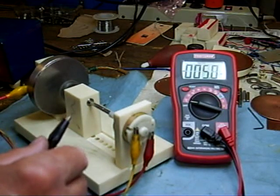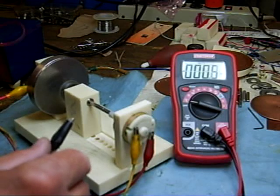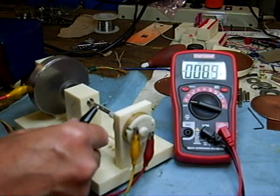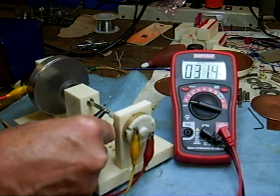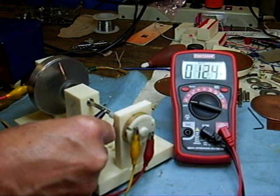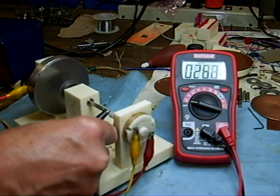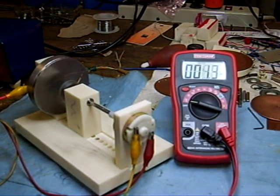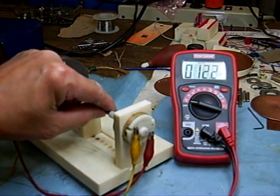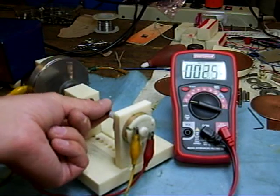So, if I take and change the direction around, and those were minus, and go the other way, now we get a positive 30. Slow it down, 26, 24, slow it way down, nothing. Speed it up. So, it's pretty obvious that you can actually generate the same current by moving only the conductor.